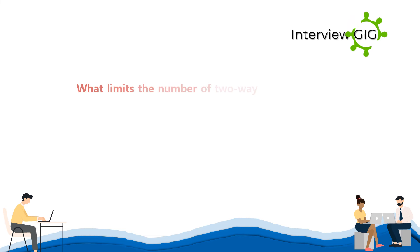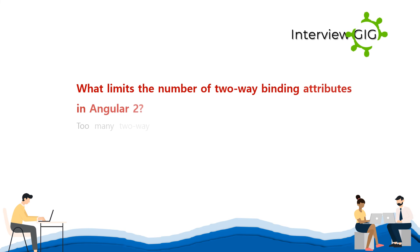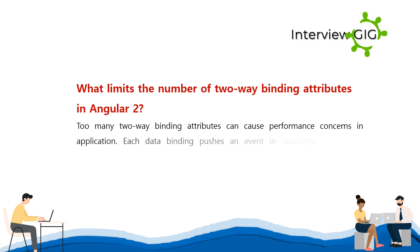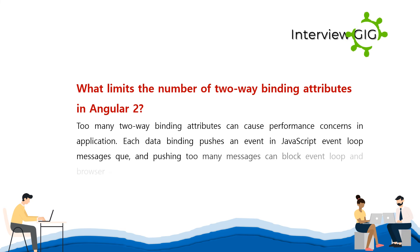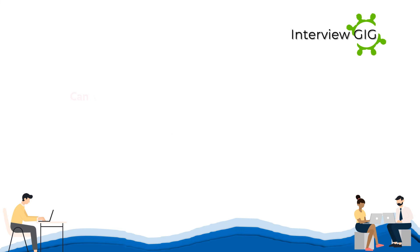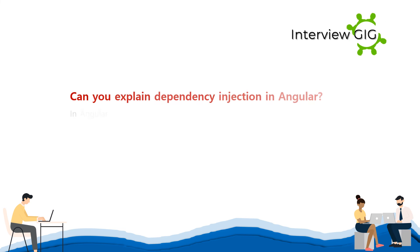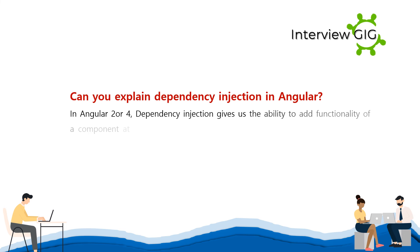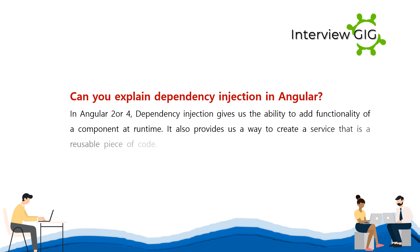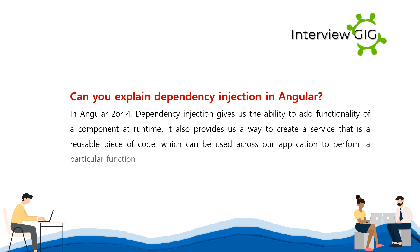What limits the number of two-way binding attributes in Angular 2? Too many two-way binding attributes can cause performance concerns in an application. Each data binding pushes an event in the JavaScript event loop message queue, and pushing too many messages can block the event loop and browser window. Can you explain dependency injection in Angular? In Angular 2 or 4, dependency injection gives us the ability to add functionality of a component at runtime and provides a way to create a reusable service that can be used across our application to perform a particular function.